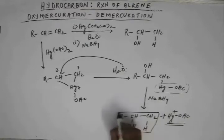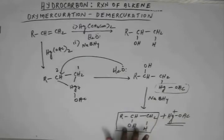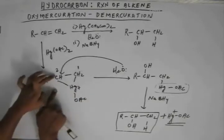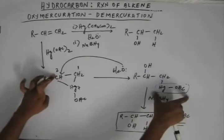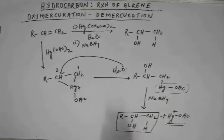So what we have effectively is our alcohol. We have done addition of water — H and OH effectively — in concurrence with Markovnikov's rule, but without rearrangement. We chose C2 for the addition of OH, meaning OH has been added to the more substituted carbon as per Markovnikov's rule. When OH gets added to the more substituted carbon, this mercuric acetate part comes out to the terminal carbon, reducing the hindrance. So we have got a Markovnikov product without rearrangement.